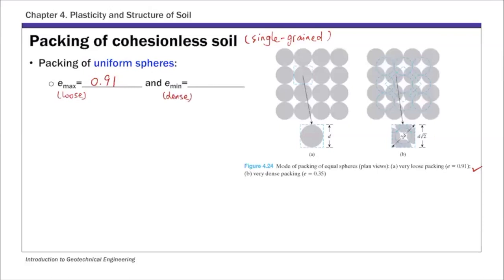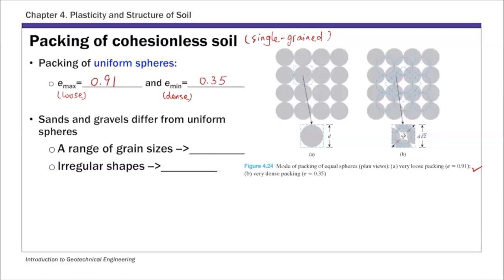For the densest state, the minimum void ratio achievable with equal spheres is 0.35. These are theoretical bounds for void ratio with equal spheres. Real soils differ because sands and gravels have a range of grain sizes — smaller grains may occupy voids between larger particles, which decreases the void ratio. However, real particles have irregular shapes, which tends to increase the void ratio by creating larger voids.